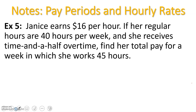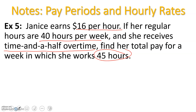Example five: Janice earns $16 per hour. Her regular hours are 40 hours per week and she receives time and a half for overtime. What is her total pay for a week in which she works 45 hours? Janice worked 40 hours of regular time and five hours of overtime, since she is scheduled for 40 hours.